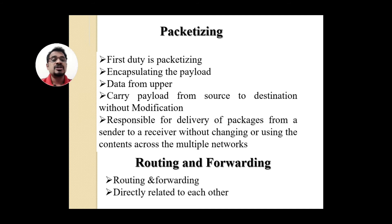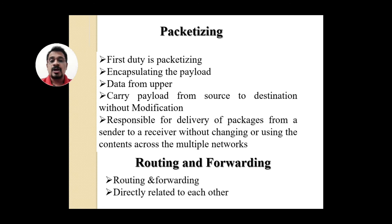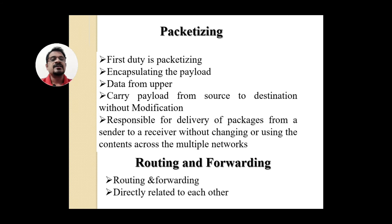The network layer is responsible for delivery of packets from sender to receiver without changing or modifying the contents across multiple networks. Once it identifies the shortest path between the source and destination network, it must forward the packets. First it identifies the route, then all packets are forwarded along that route toward the destination. Routing and forwarding are very important functions of the network layer and are directly related to each other, as we will see when discussing packet switching in the next video lecture.